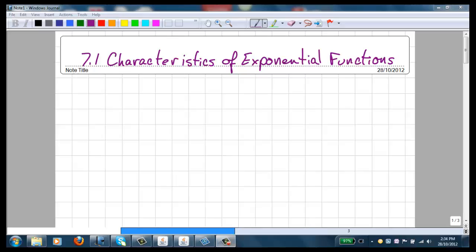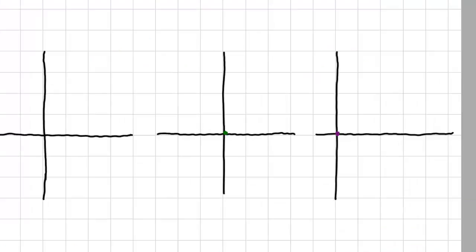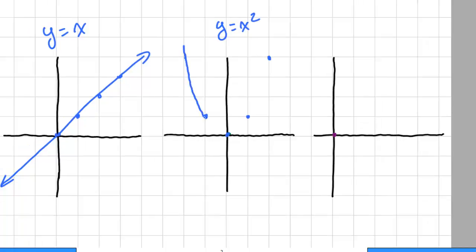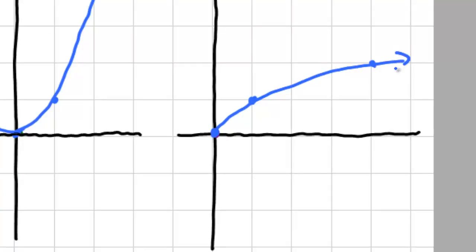From y equals x, which is a linear function, that comes up like this, to y equals x squared. So we've got the parabola for this quadratic function, and y equals the square root of x. Function that looks like this.